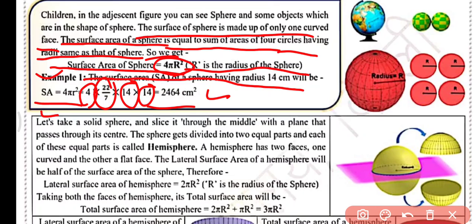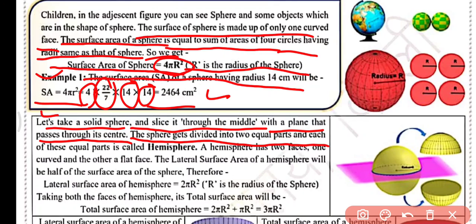Now let's take a solid sphere and slice it through the middle. We will cut it with a parallel plane that passes through the center. The sphere gets divided into two equal parts, and each of these equal parts is called a hemisphere. Half of the sphere is called a hemisphere, and half of a circle is called a semicircle. Keep that in mind.